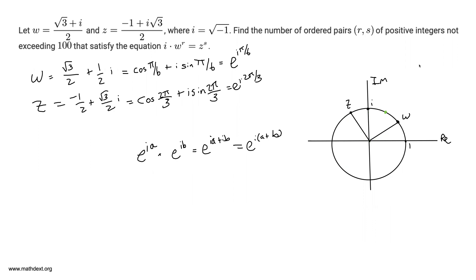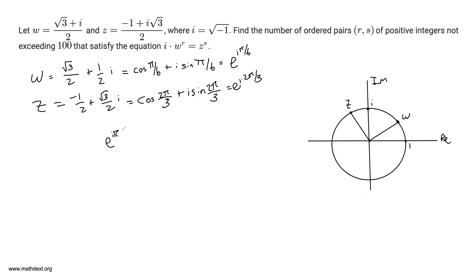Now that we have all that established, let's dive into the real problem. We have i times w to the power of r equals z to the power of s. Let's write this in exponential form. i, as a rotation, is a π/2 rotation, so i equals e to the i·π/2. So on the left-hand side we have e to the i·π/2 times w to the r, and this equals z to the s.